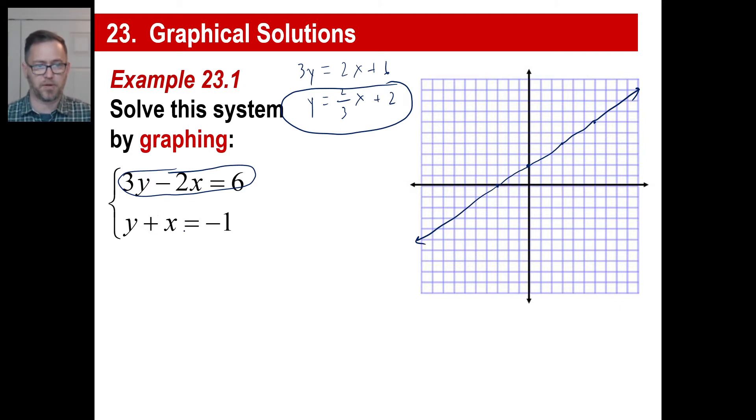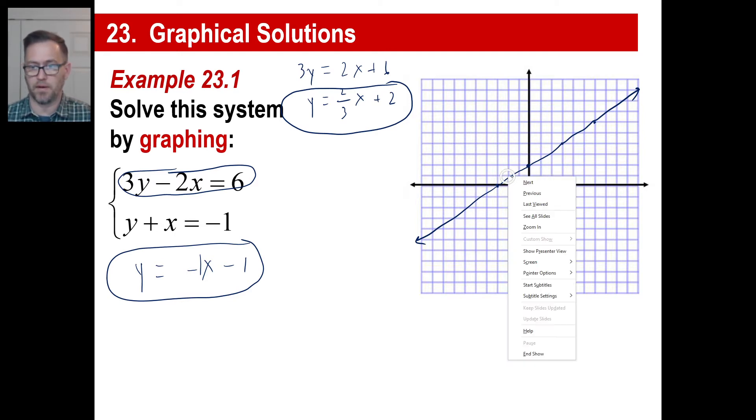Okay, the second one is y plus x equals negative 1. That's a piece of cake. You just move the x over, right? Y is equal to negative x minus 1, okay? So minus 1 is your y-intercept. So it's just right there. Your slope is, if you want to think of this as negative 1, you can just do 1 over 1, right? You know that's going to be pointing down to the right. So you're going to go like this. You're going to go up 1 to the left 1, up 1 to the left 1, up 1 to the left 1, you know, like that.